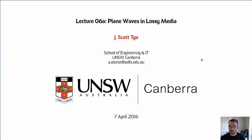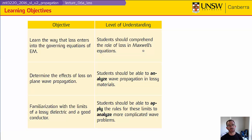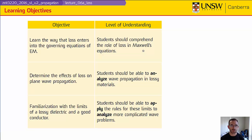The objectives from today's lecture are three. The first is to figure out how loss comes into the governing equations of electromagnetics, into Maxwell's equations, and into the wave equation, and you need to understand where the loss mechanisms show up in the mathematics. You need to understand what effects this causes on plane wave propagation, so you need to be able to analyze wave propagation in lossy materials and look at how the wave attenuates as it propagates through the material. Finally, you want to understand the two specific cases that are very important in electrical engineering: the case of a good dielectric and the case of a good conductor.